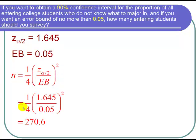So now just plug in. We have our one-fourth. Our z sub alpha over 2 is 1.645 over our error bound, which is 0.05. And I square it, and I put that in my calculator, and I got 270.6. Now we always round up, so I'm going to need to survey 271.